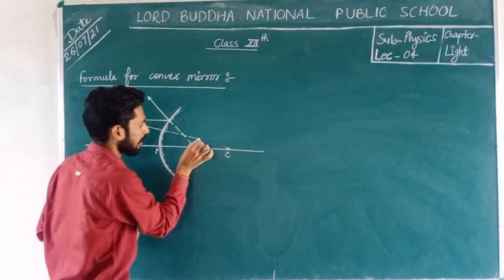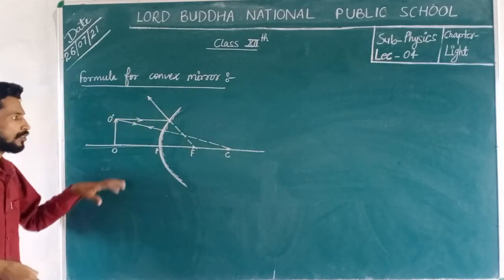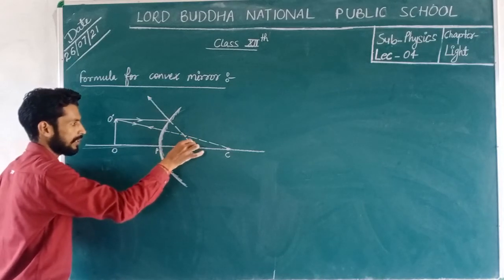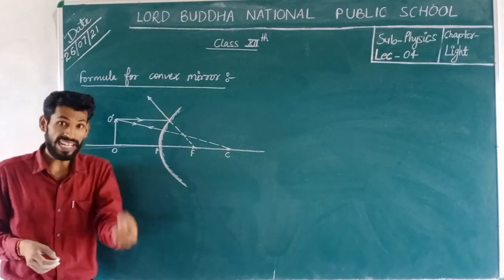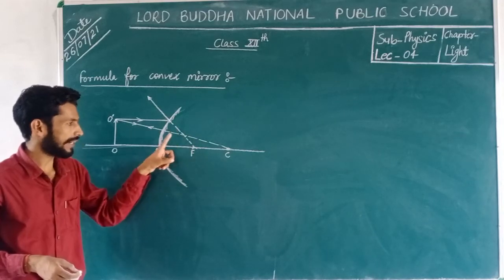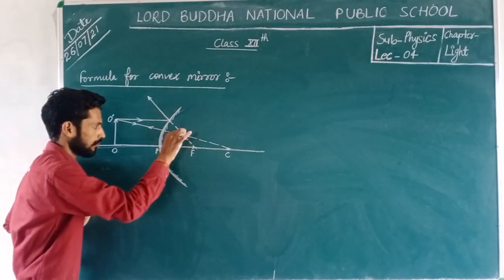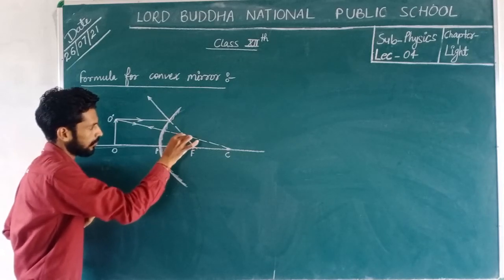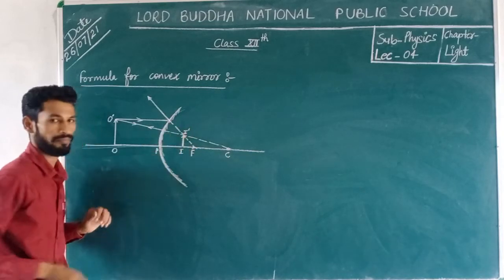This is the center of curvature, and the ray of light passes through here. This is the path followed when the ray reflects from the curve. That is the ray diagram for the image formation by the convex mirror. At the point where the two reflected rays appear to intersect each other, that is this point, there will be the image.